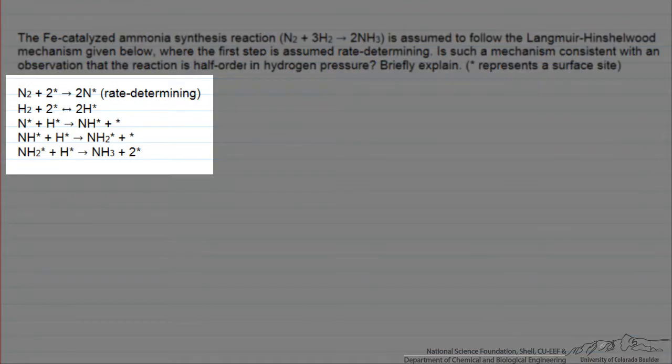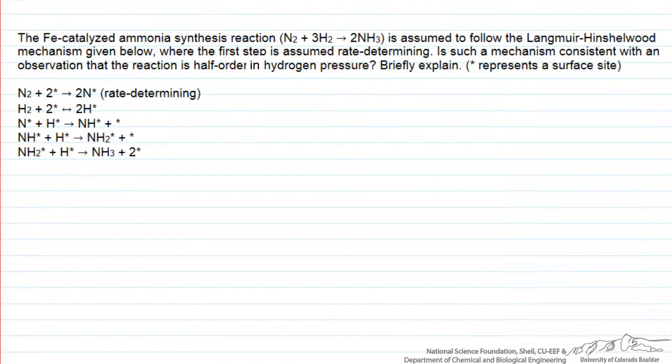In this problem, we're given a proposed mechanism for ammonia synthesis, and this Langmuir-Hinshelwood mechanism. We're asking if it is consistent with an observation that the rate is proportional to hydrogen to the half order. Is that consistent with this mechanism?